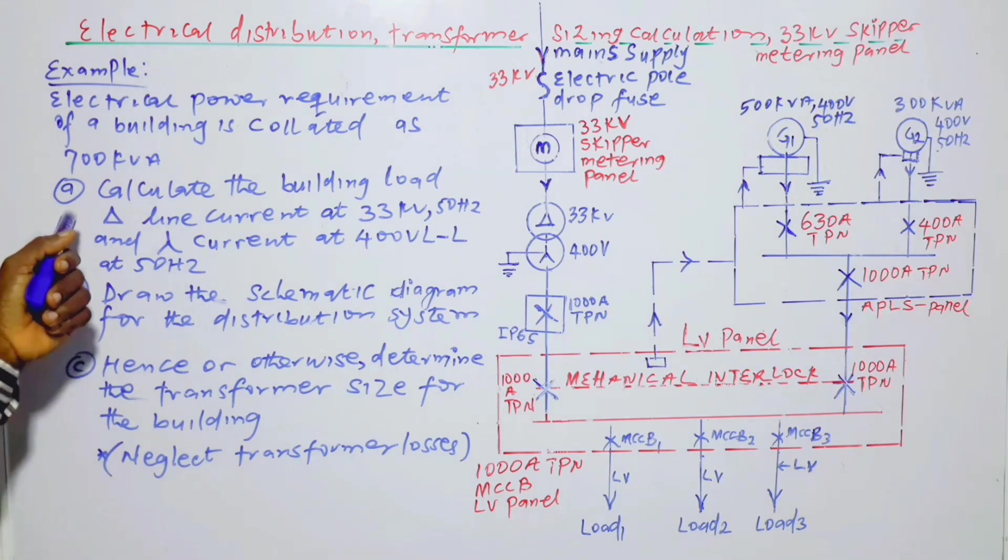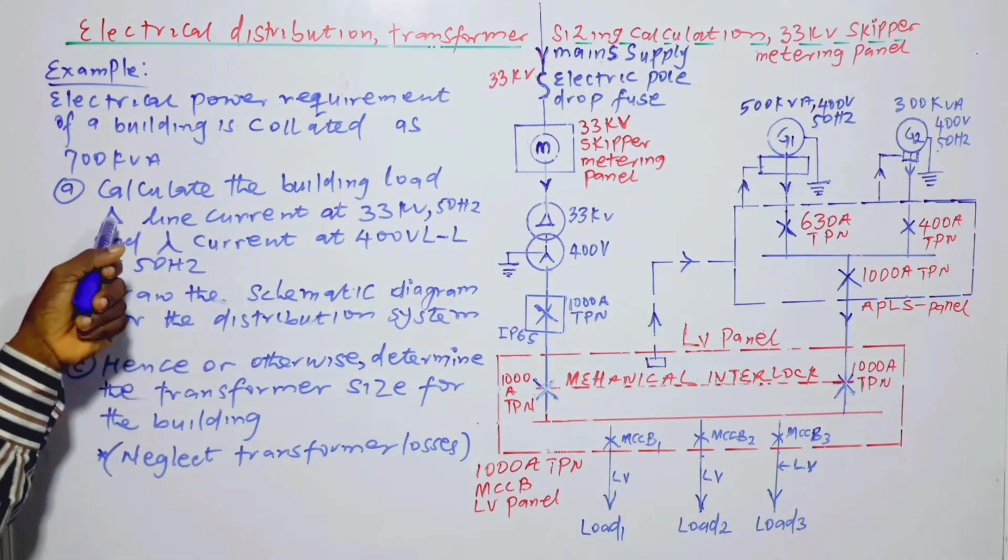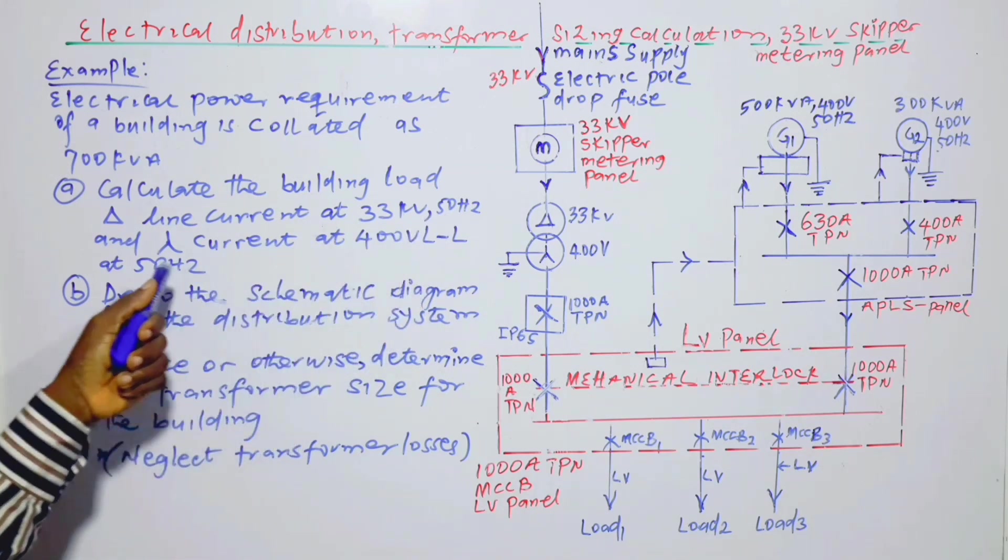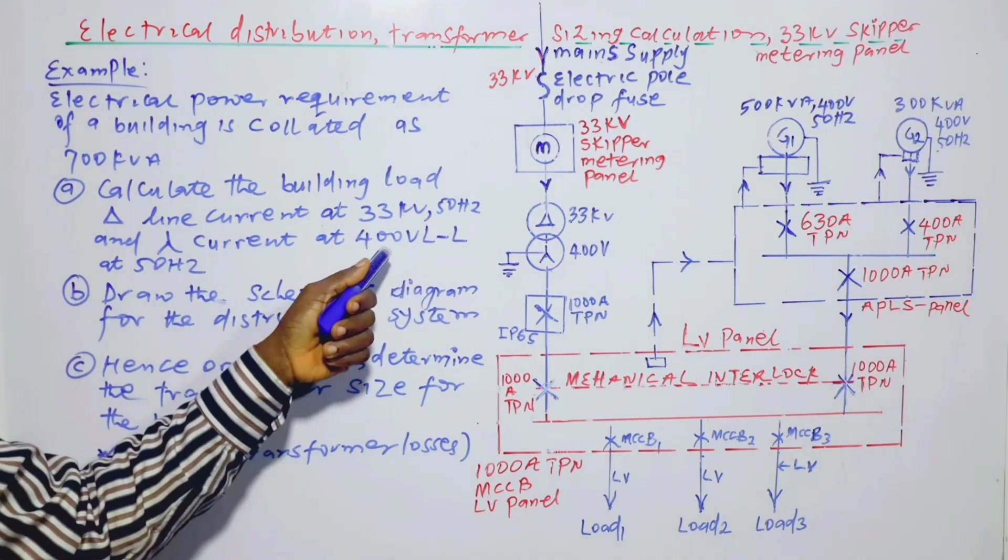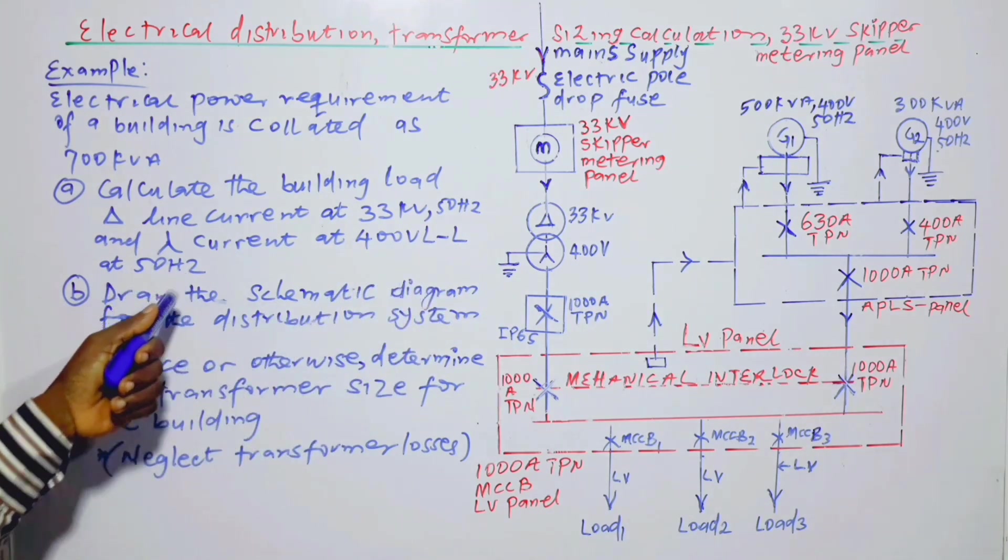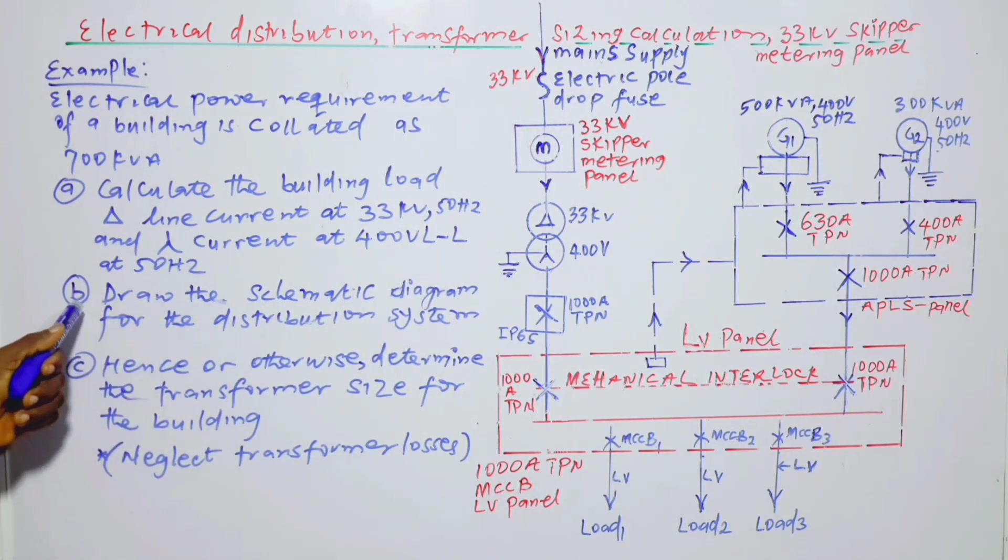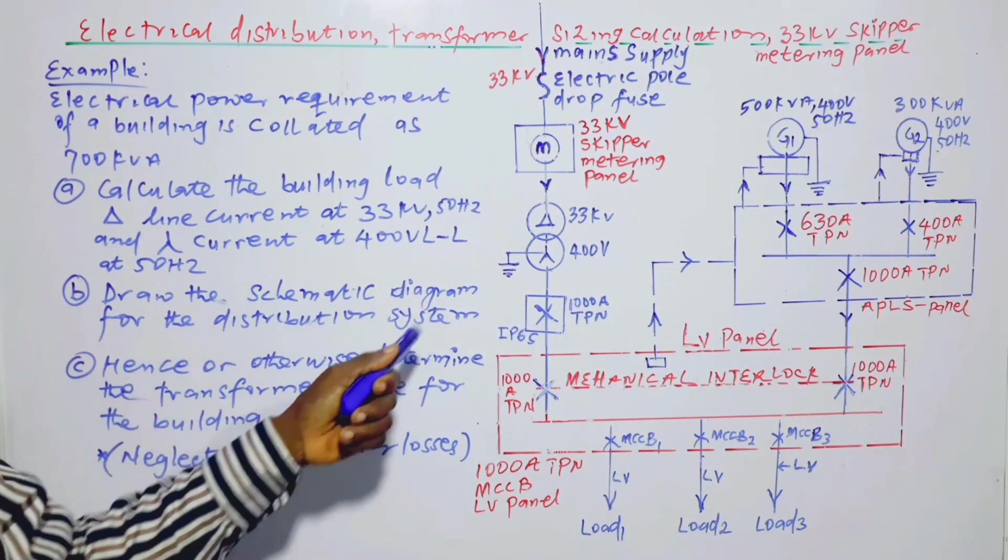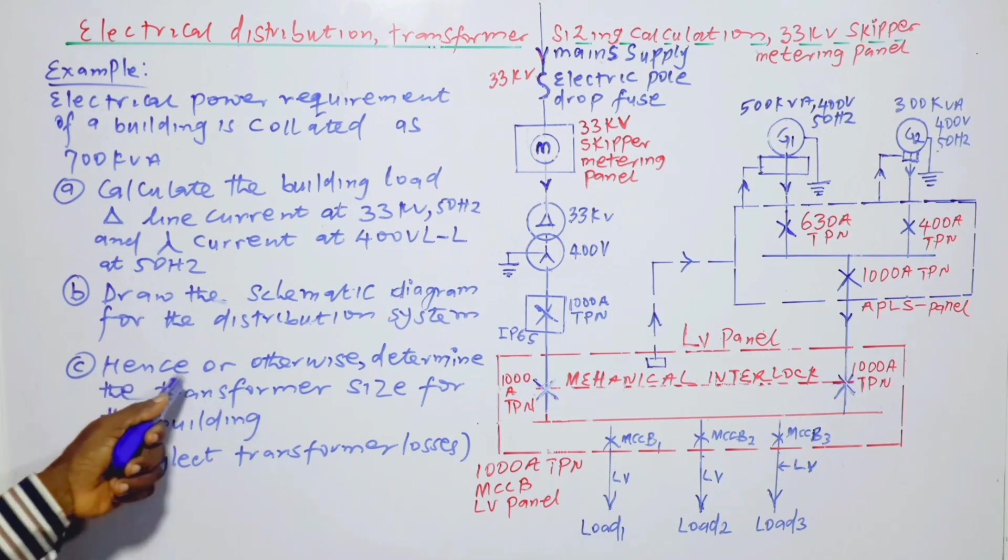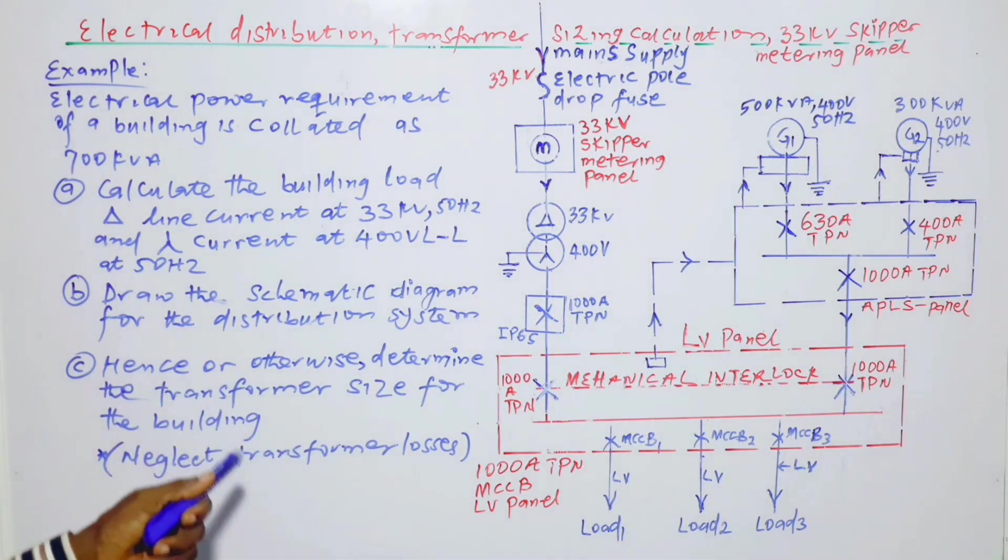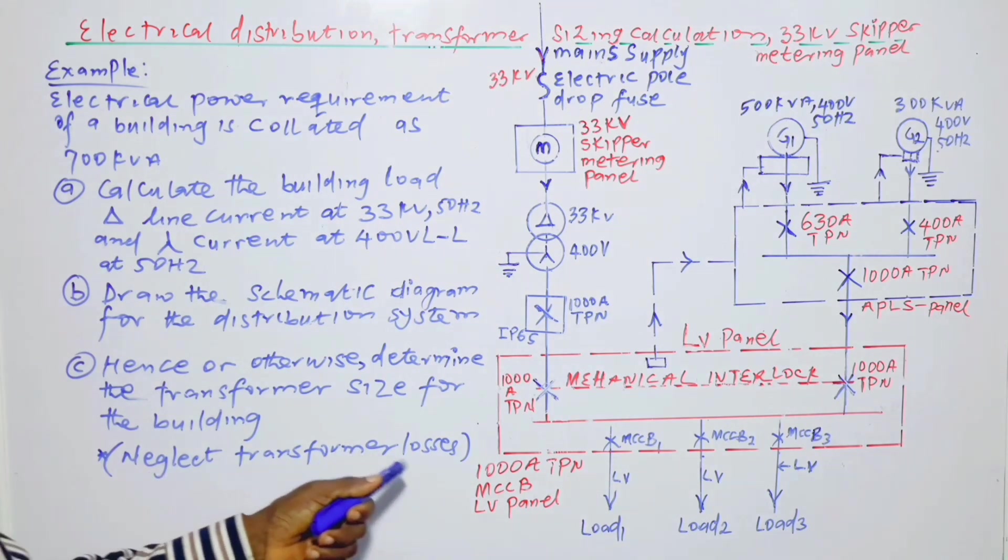So the questions are: Part A, calculate the building load delta line current at 33 kV, 50 Hz, and star current at 400V line to line at 50 Hz frequency. B, draw the schematic diagram for the distribution system. C, hence or otherwise, determine the transformer size for the building. Neglect transformer losses.